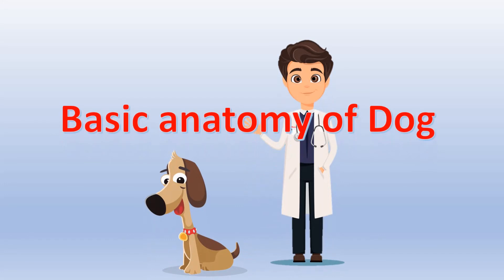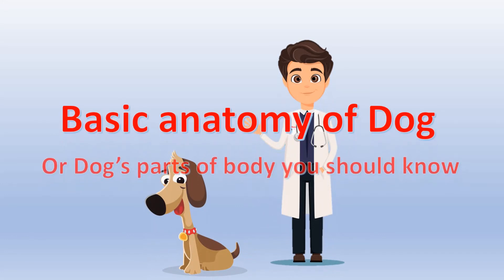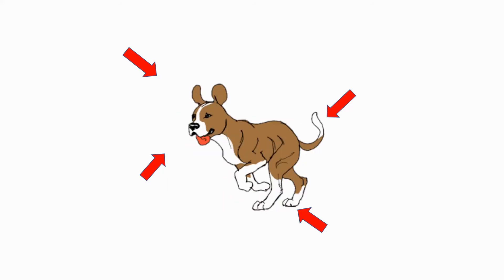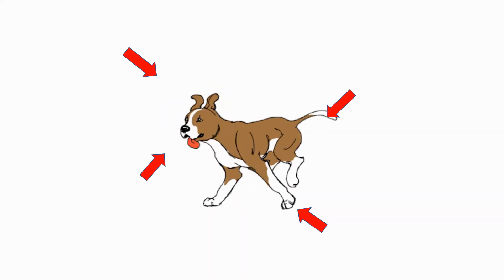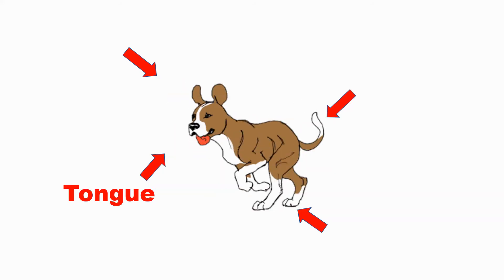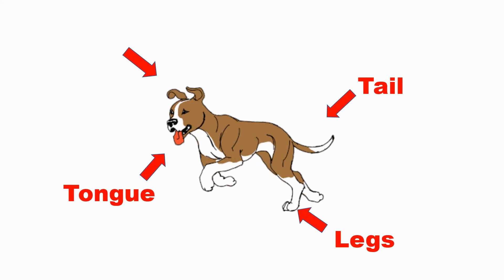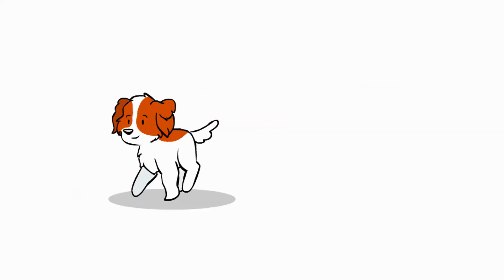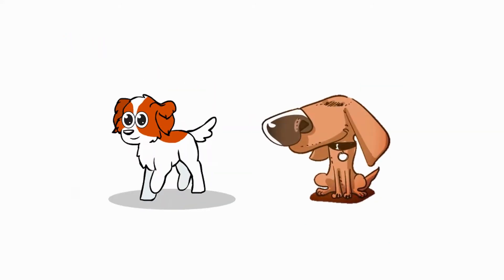Basic anatomy of a dog — parts of the body you should know. You may be familiar with some parts of a dog's body like tongue, tail, legs, ears, eyes, and nose, but others might be surprising for you.